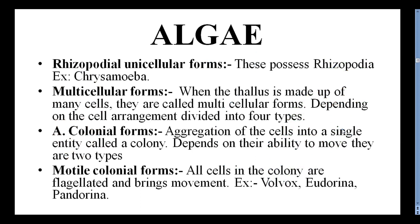Rhizoporeal unicellular forms possess rhizopodea for movement. Example: Chrysomoeba. Multicellular forms occur when the thallus is made up of many cells. Depending on cell arrangement, multicellular forms are divided into four types.